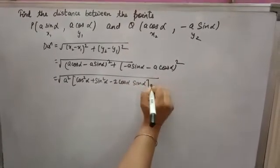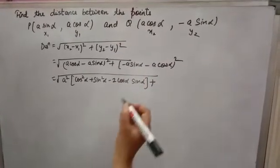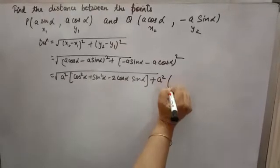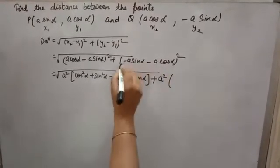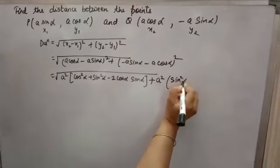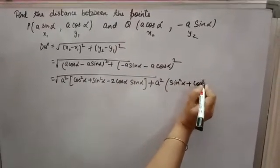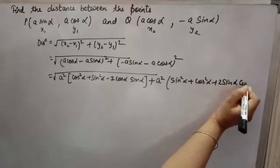Here also minus a whole square you can take common. Minus a whole square is a square only. So a square will come. This also open with formula a plus b whole square. So you will get sin square alpha plus cos square alpha plus 2 sin alpha cos alpha.